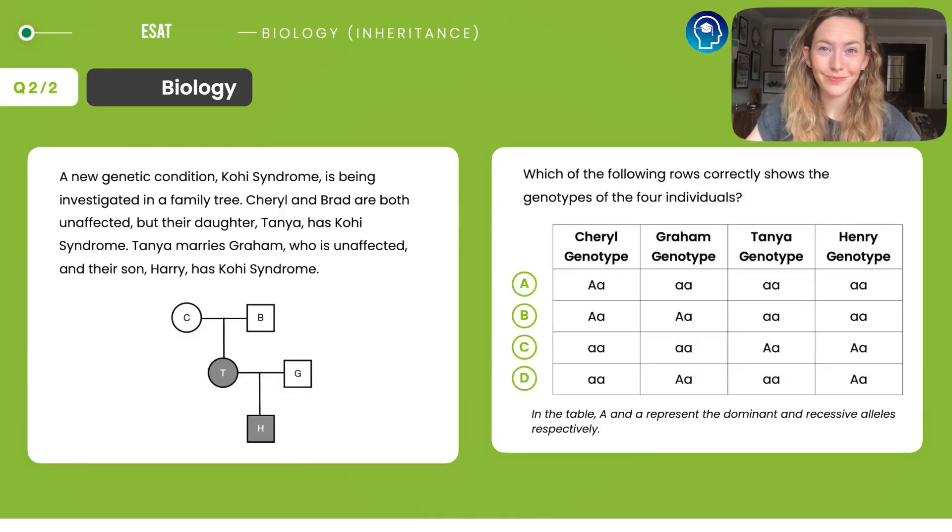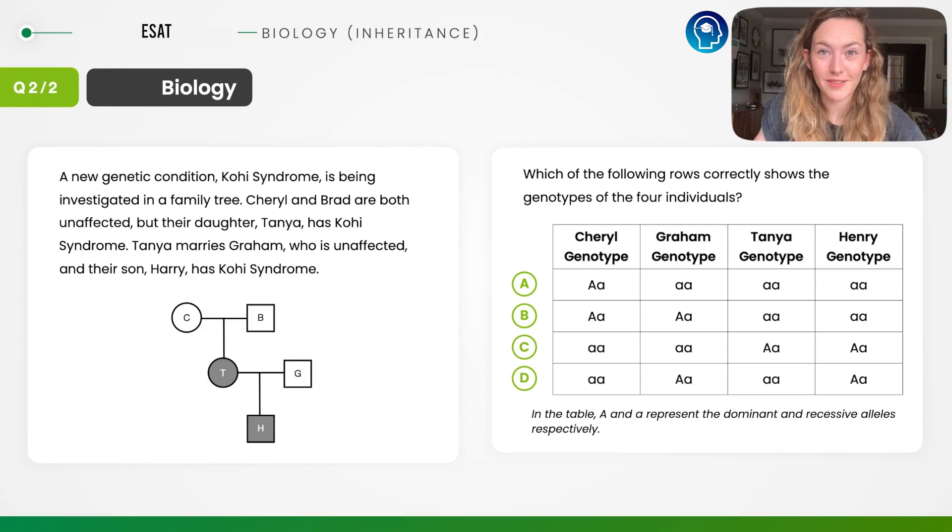Here's the second question, pause the video and give it a go. So the first thing we need to notice from this diagram is that this is a recessive condition, because we've got two parents Cheryl and Brad, they are unaffected, and they have an affected child. So it has to be recessive. Remember our shortcuts in the previous video. So Tanya must be lowercase a lowercase a, so homozygous recessive. So immediately I can eliminate an option. Let's go to Tanya's column and I can eliminate option C.